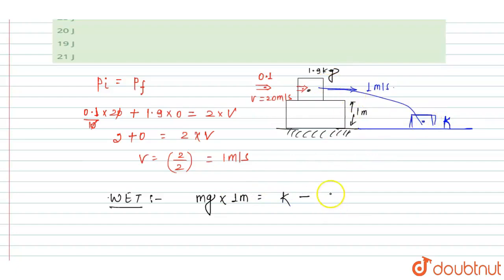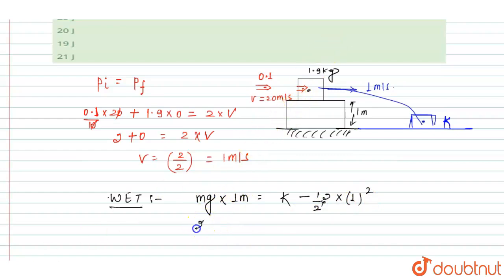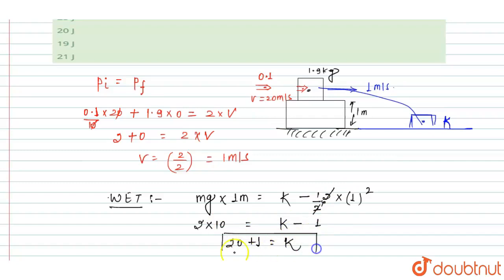So m·g·h = K_final minus K_initial, where K_initial = ½mv². Mass is 2 kg, velocity is 1 m/s, so ½mv² = ½ × 2 × 1² = 1 J. Work by gravity = 2 × 10 × 1 = 20 J. Therefore: 20 = K minus 1.